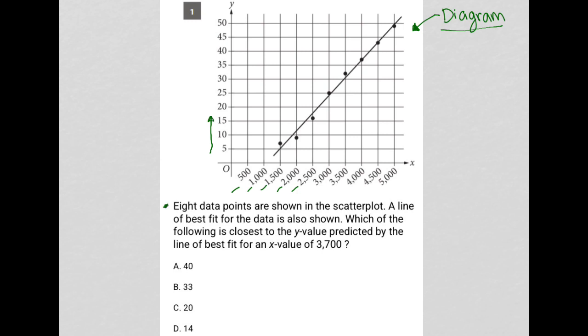The question here says 8 data points are shown in the scatter plot. So we see those 1, 2, 3, 4, 5, 6, 7, and 8.